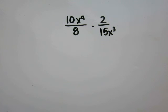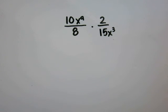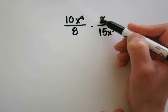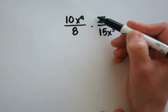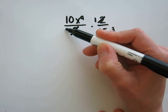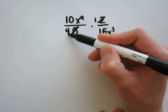Problem 15: 10x to the 9th power over 8, times 2 over 15x cubed. My first step will be to see if I can simplify anything. 2 and 8 are both divisible by 2. 2 divided by 2 is 1, and 8 divided by 2 is 4.